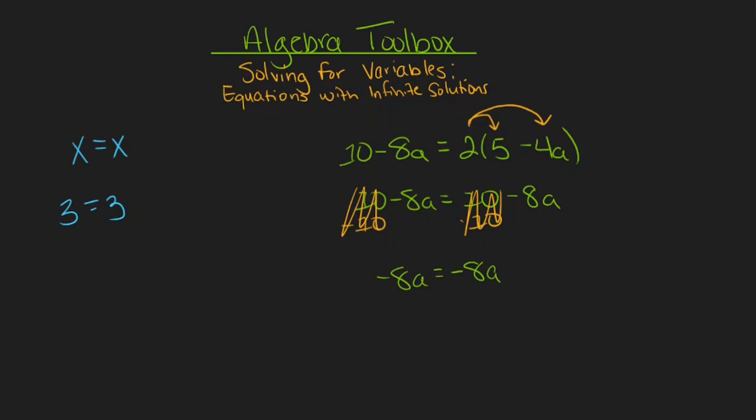Let's say though that even here we didn't see it and we decided to divide by negative 8 on both sides in order to get a on its own. If we did that we would end up with a equals a and that's going to be true no matter what value of a we get.